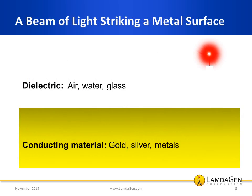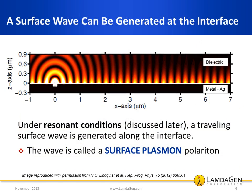We start by considering what happens when a beam of light traveling through air or water — a non-conductor more generally called a dielectric — reaches the surface of a conducting material or metal. At the interface between the metal and the dielectric, something remarkable happens. Under specific conditions, called the resonant conditions, a traveling surface wave is generated at the impinging point of light. The wave travels along the interface, represented in this picture by the intensity contour of the associated electromagnetic field. This wave is called a surface plasmon polariton, commonly referred to as a surface plasmon.